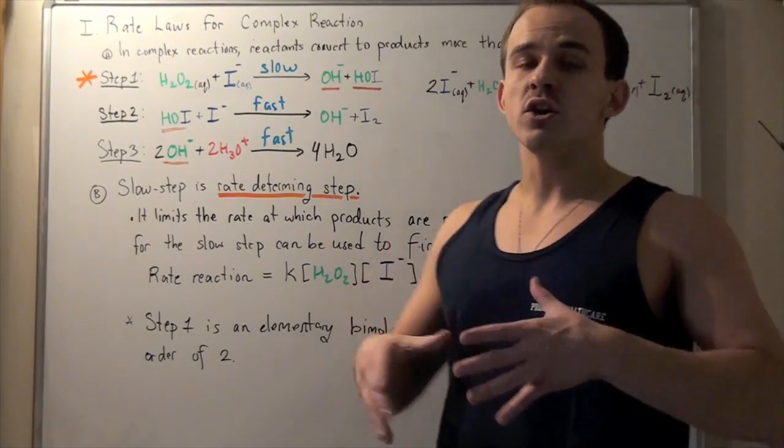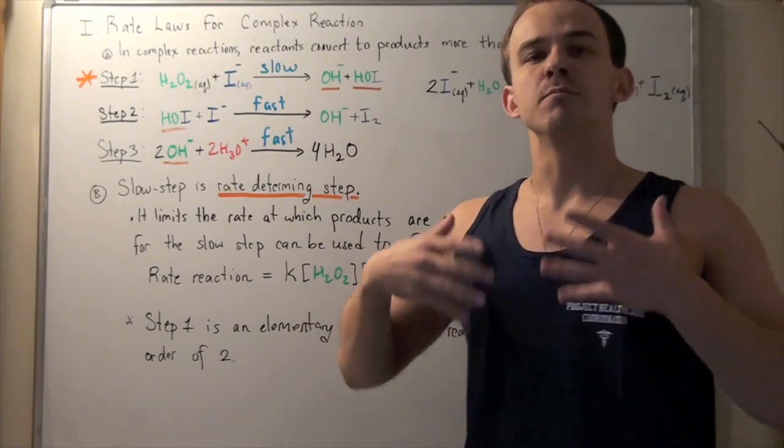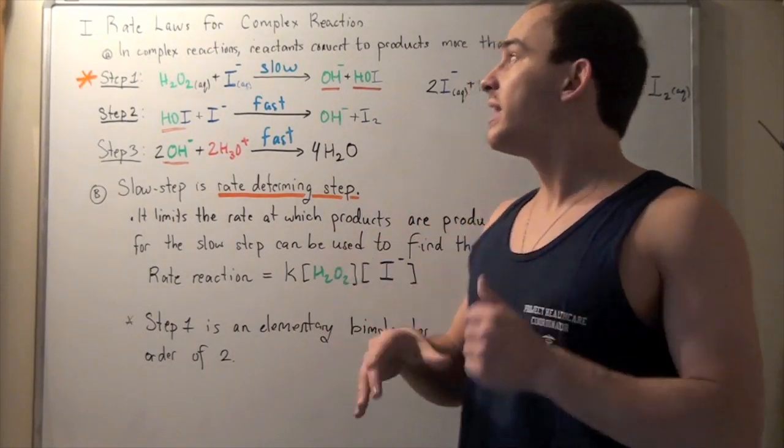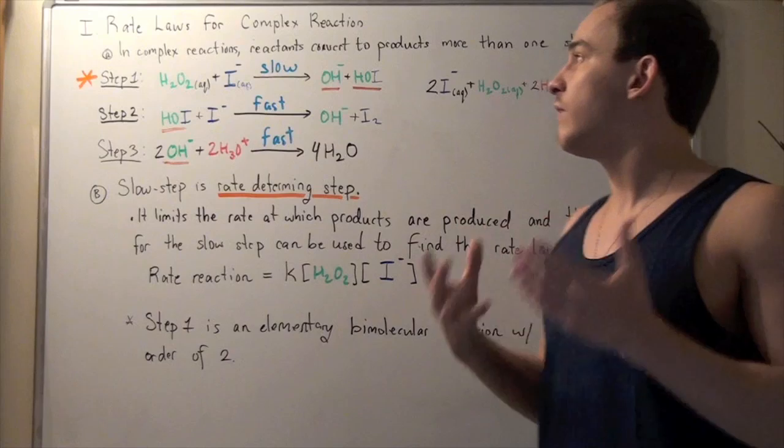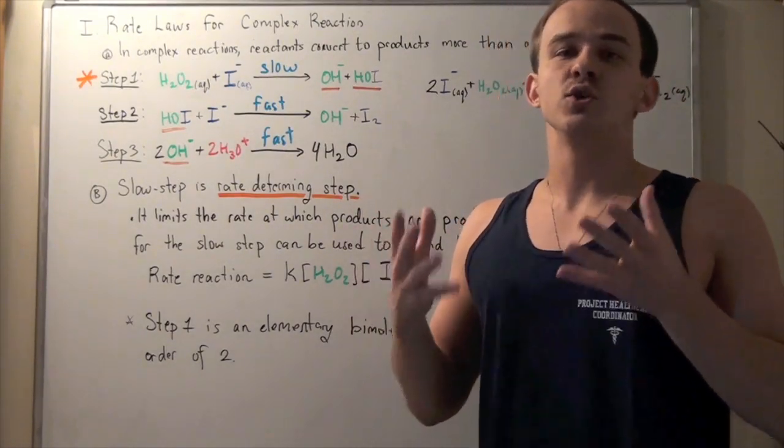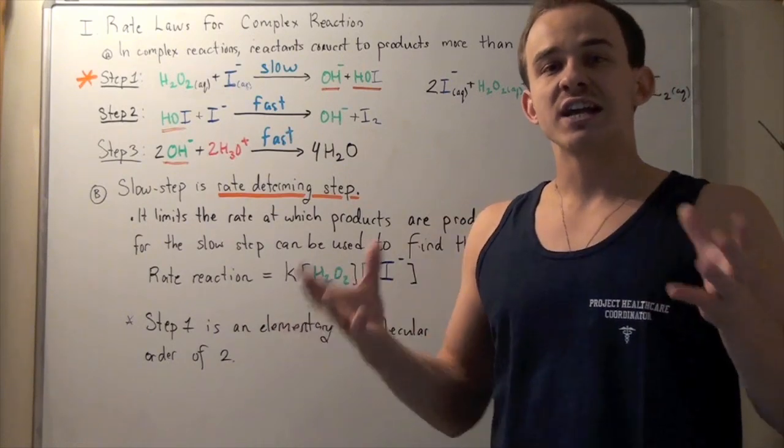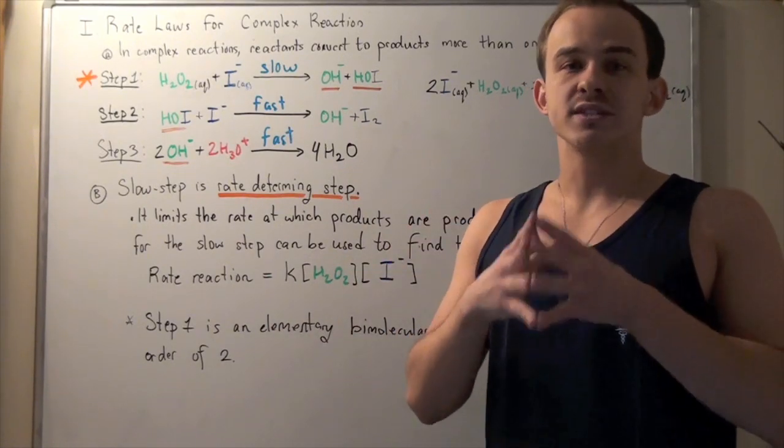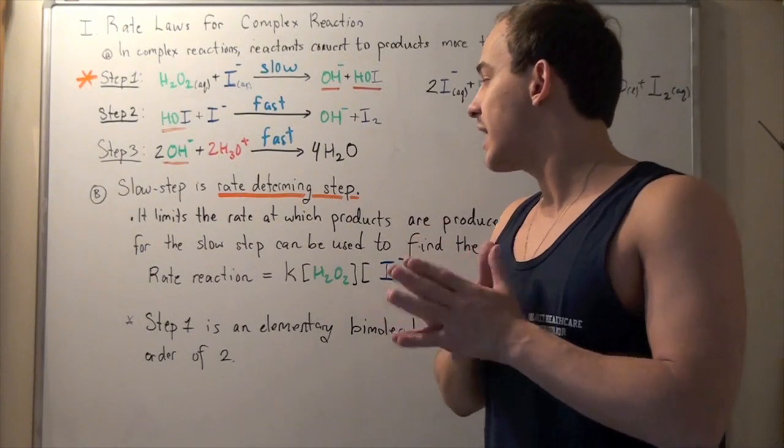Now, remember, the rate law can only really be found experimentally via results. But this is a second way with which you can find the rate law, but you still need to actually find the rate law using the results. And then you can check the two and see if they coincide. And usually, for the most part, they will coincide.